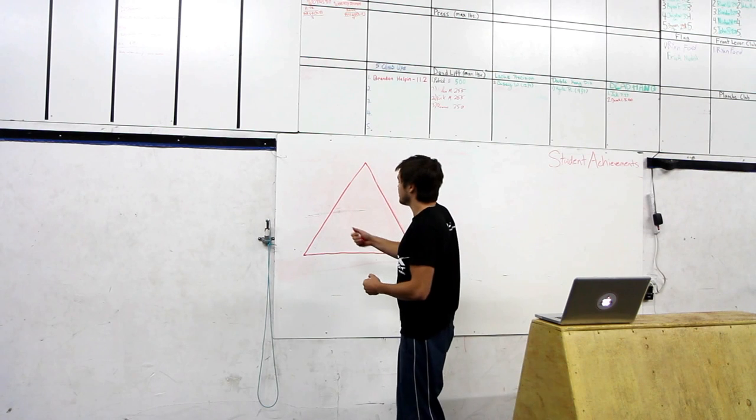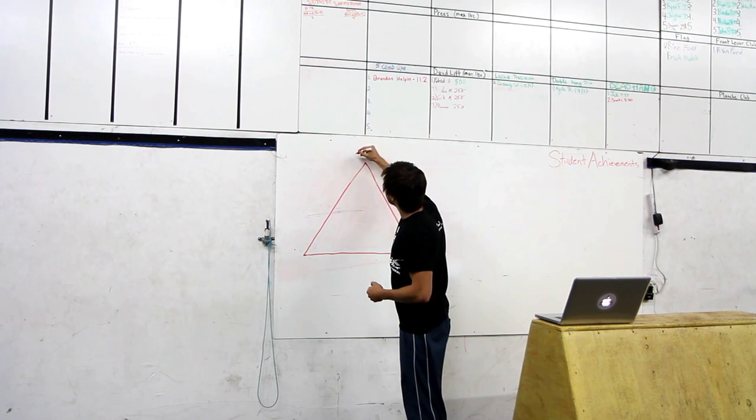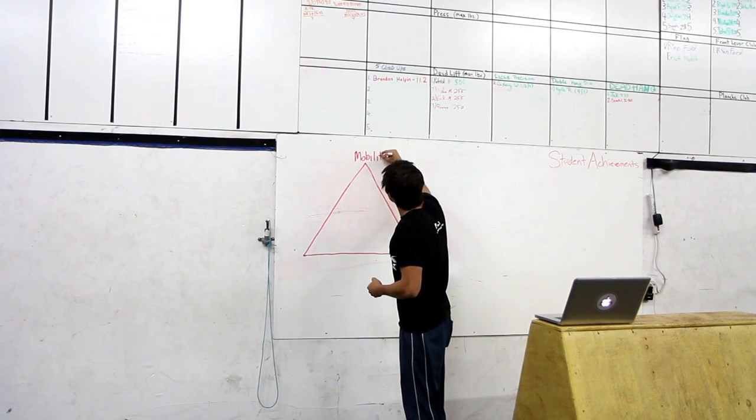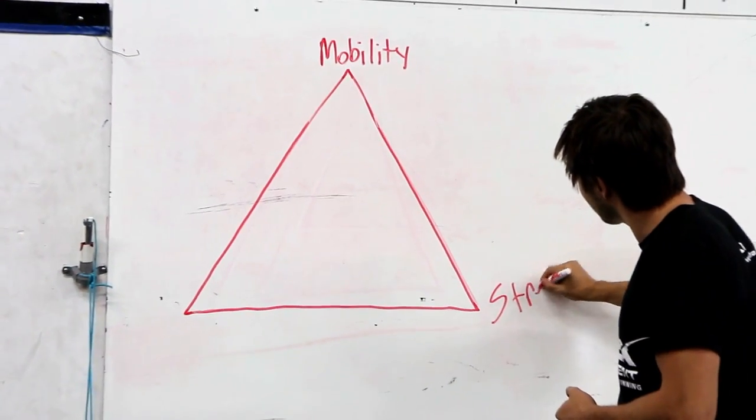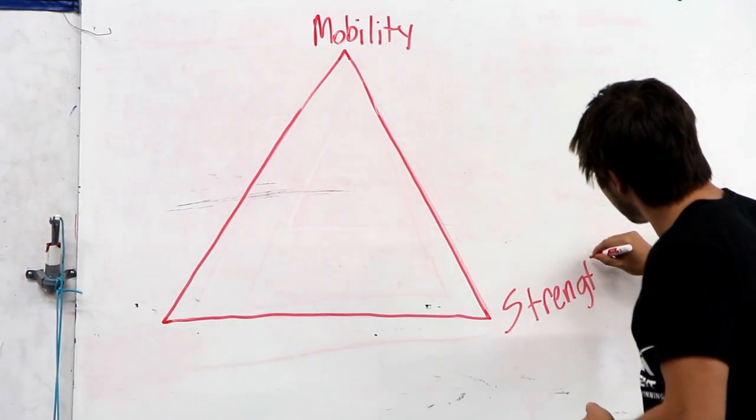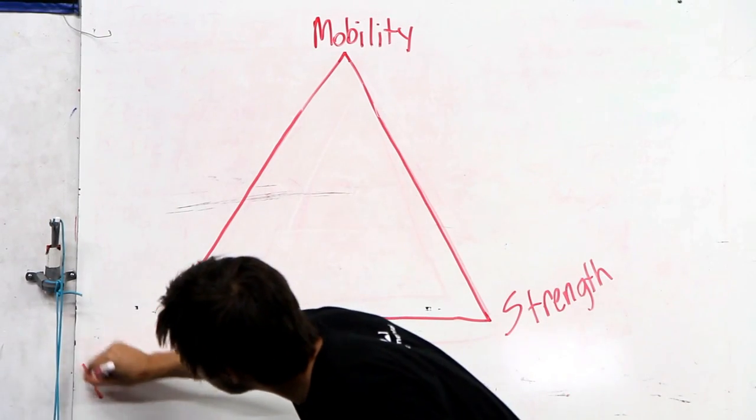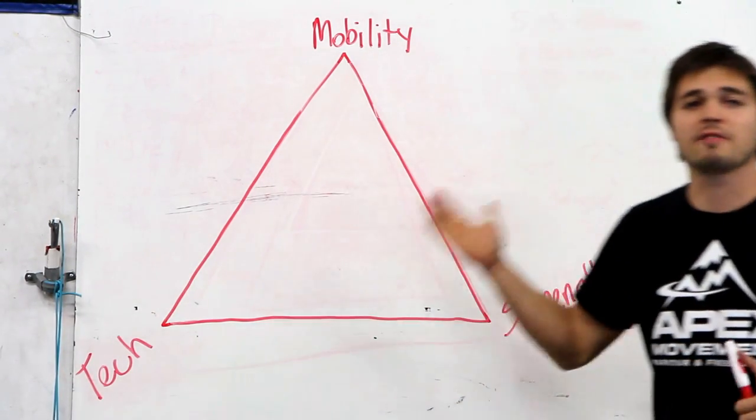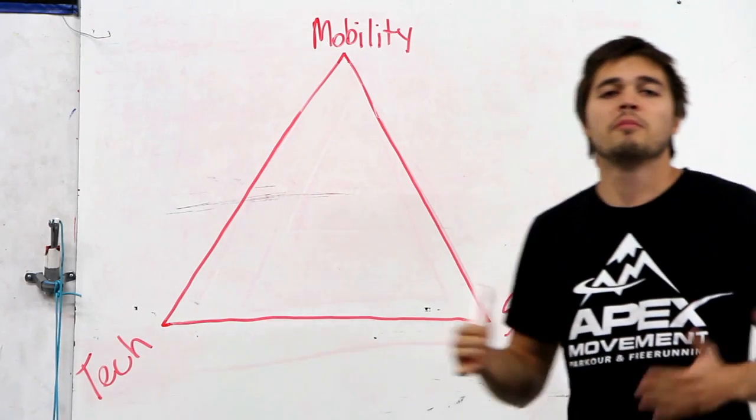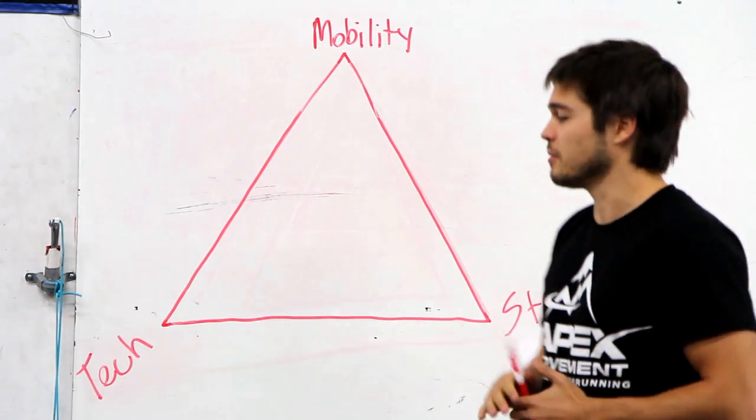And when we're talking about the answer to this question, we're talking about three things. First off we've got mobility, strength, and technique. And you must have all three of these things in order to do parkour safely for the short term and the long term.